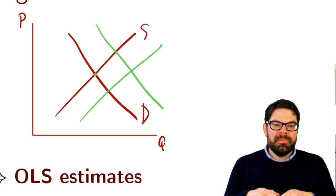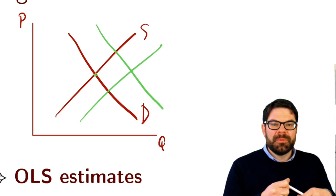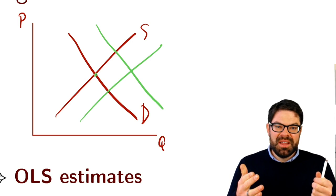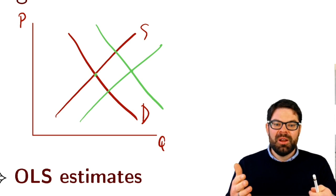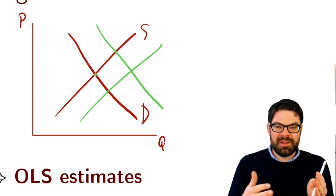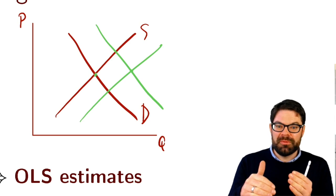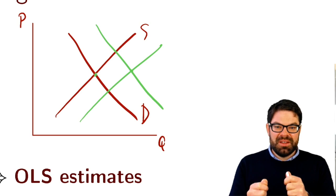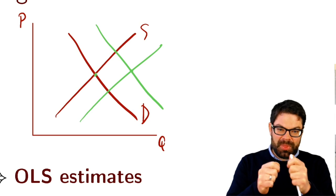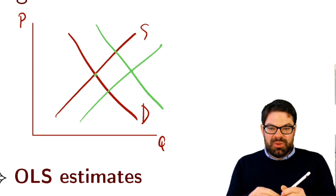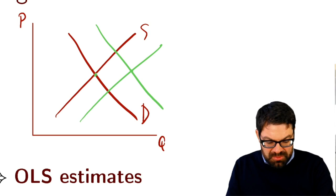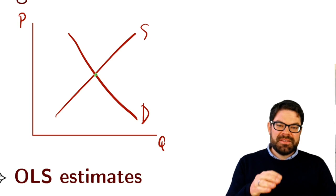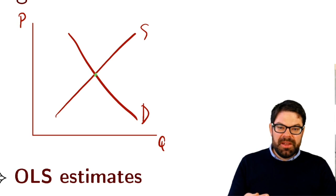Yet that's actually what we typically want to know. In very basic labor economics, one of the questions is: does an increase in the number of workers — for example, through immigration — reduce wages? That's equivalent to a shift of the supply curve to the right, and then we move down the demand curve in the simplest possible model. But if we only observe the number of workers and wages, that will not be sufficient to characterize that labor demand curve. What has already emerged in the 1920s — which you can read up on in the Mixtape — is that economists developed instrumental variables in order to overcome this problem.